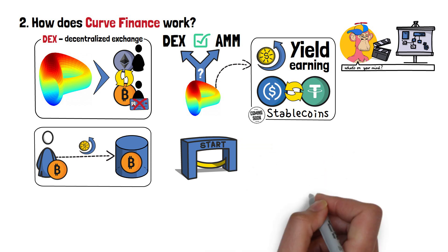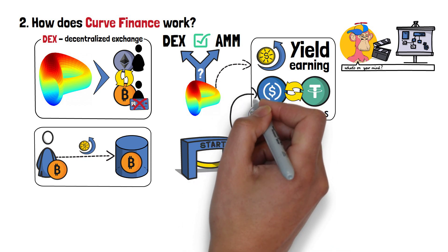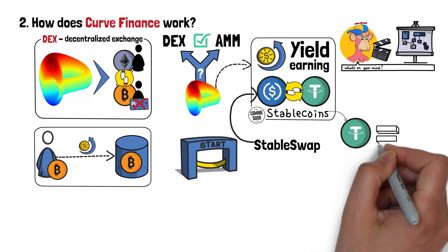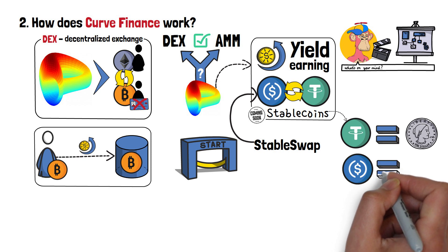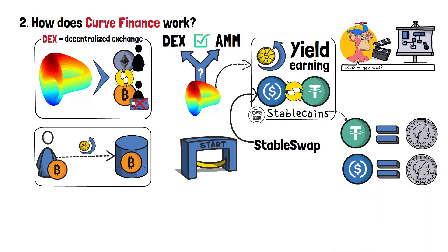During its inception, Curve Finance was called Stableswap. That's because it was only concerned with decentralized stablecoin swaps. Stablecoins are cryptocurrencies that have a fixed price of $1. So, no matter what sort of a stablecoin you might take, they should always be priced the same. $1.